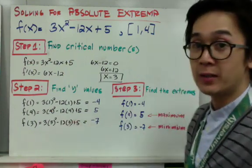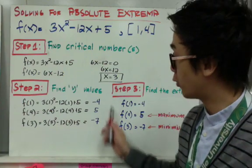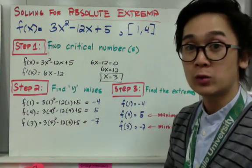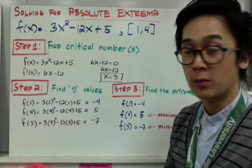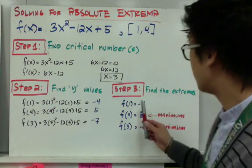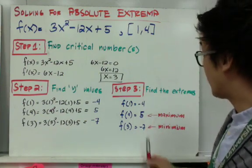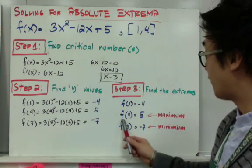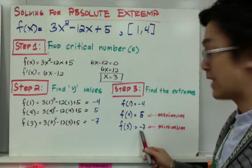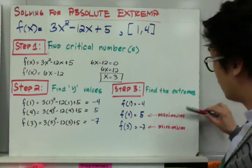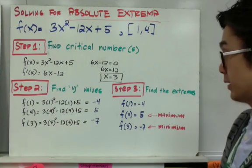The third step is to compare all your y values to determine which is the maximum and which is the minimum. Based on our computation in step 2, f of 4 which is 5 is our maximum, and f of 3 which is negative 7 is our minimum, respectively.